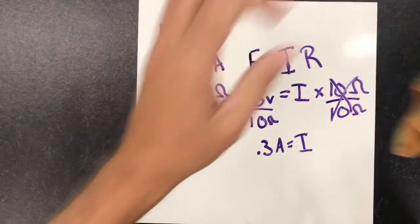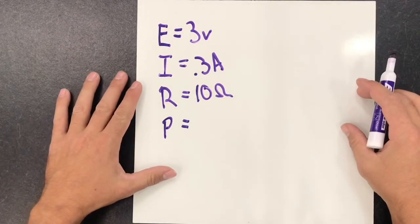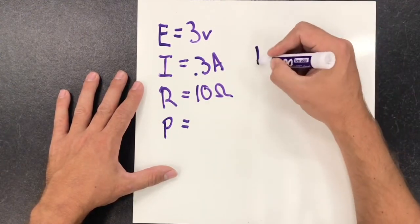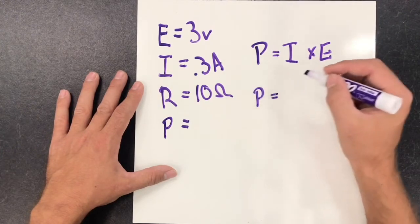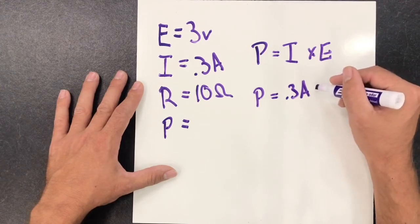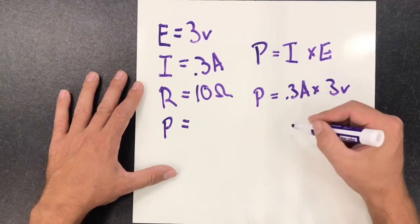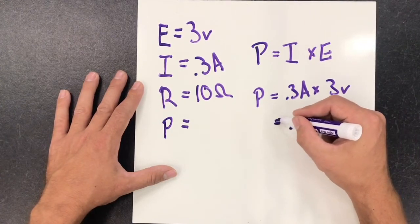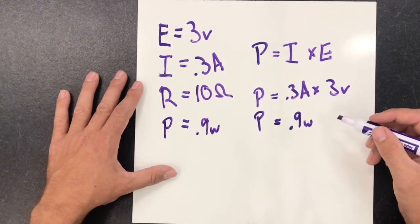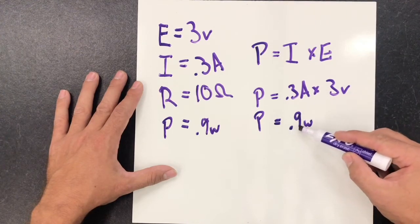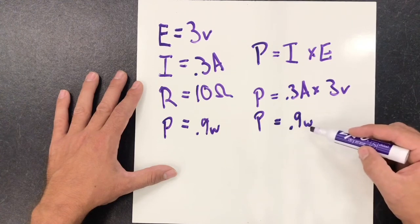Now that I've figured out the current and I have the voltage, I can figure out the wattage. Using the power formula — P equals I times E — power equals 0.3 amps times 3 volts, which equals 0.9 watts. Since I have a 1 watt resistor, and 0.9 watts is below 1 watt, I already know the resistor will be okay to plug into this circuit and it's not going to burn up.